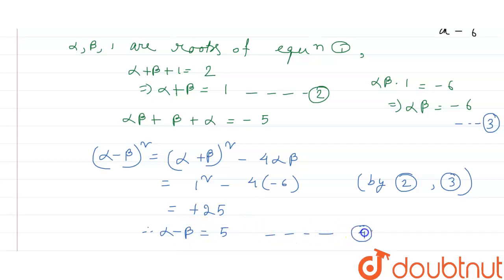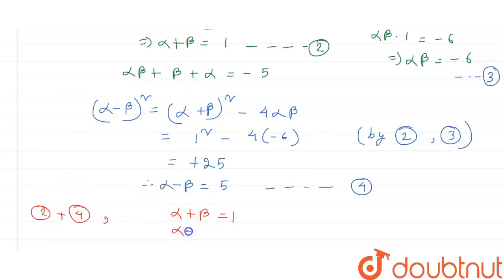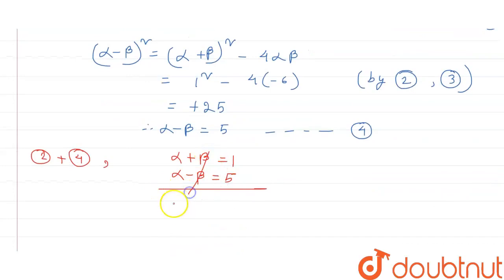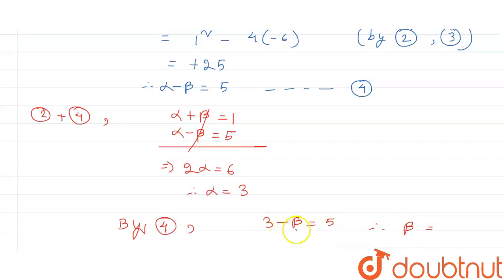From equations 2 and 4 we get: alpha + beta = 1 and alpha - beta = 5. Adding these two equations, the beta terms cancel, giving 2·alpha = 6, so alpha = 3. Substituting into equation 4: 3 - beta = 5, so beta = -2.